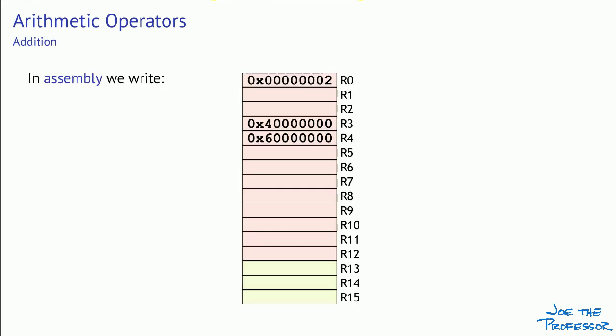Let's start by looking at the addition instruction. The subtraction instruction, SUB, works in essentially the same way as addition, so I'll only mention subtraction when we get to the important differences. Suppose we already have values in registers R0, R3, and R4 as shown here. We can use the three-operand form of the add instruction to add the value in R0 to itself and put the result in R1. We will be computing 2 plus 2, and sure enough, we get the correct value in R1.